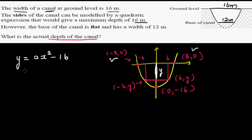So I can say well, when y is 0, x is 8. So a times 8 squared which is going to be 64 minus 16. So I can say 16 is equal to 64a.